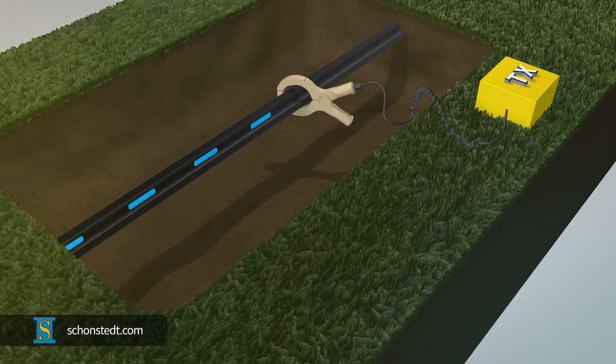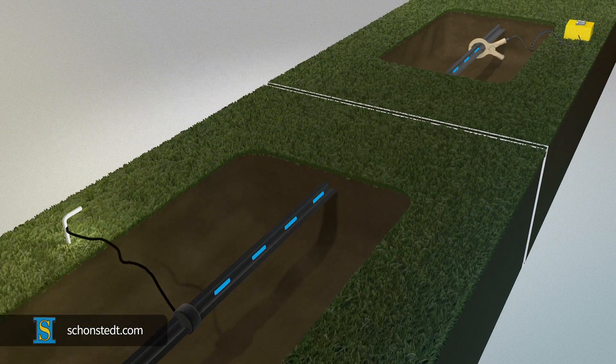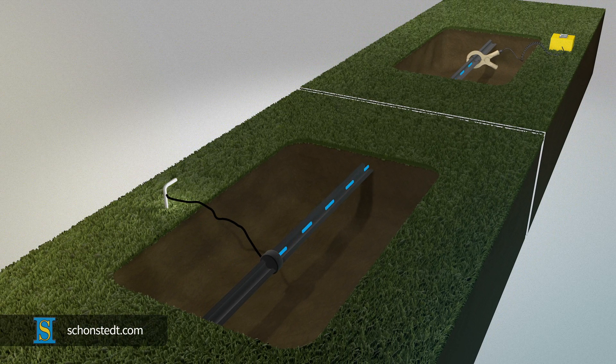If only one end can be grounded, it should be the far end. Otherwise, most of the current will quickly flow from the clamp to the near-grounded end.